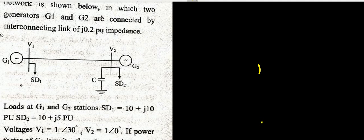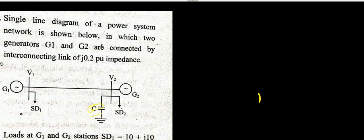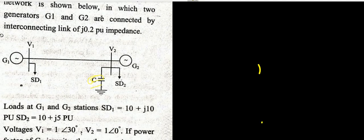In this question they have asked about reactive power compensation through a shunt-connected capacitor. There is a single line diagram of a power system network in which two generators G1 and G2 are connected by an interconnecting link of j0.2 per unit reactance. SD1 is the complex power delivered to load 1 and SD2 is the complex power delivered to load 2.